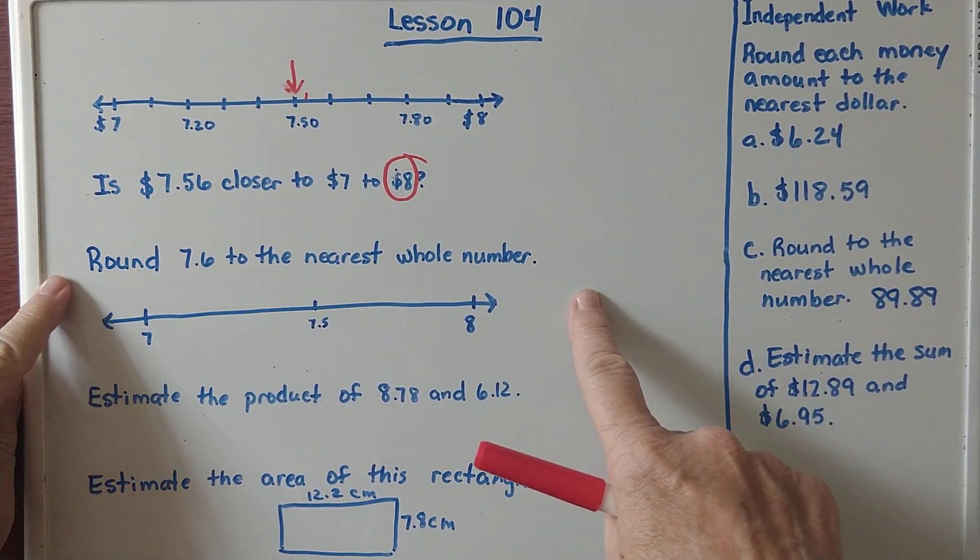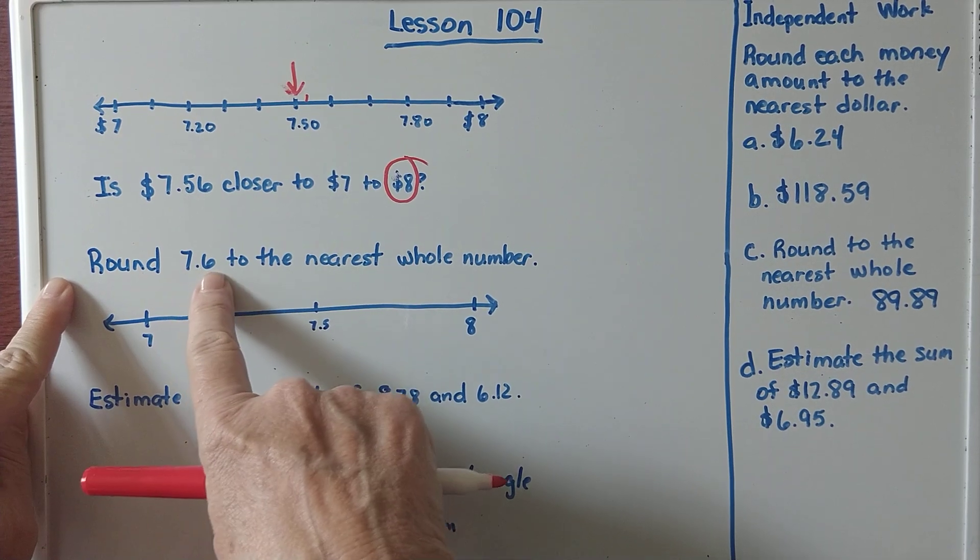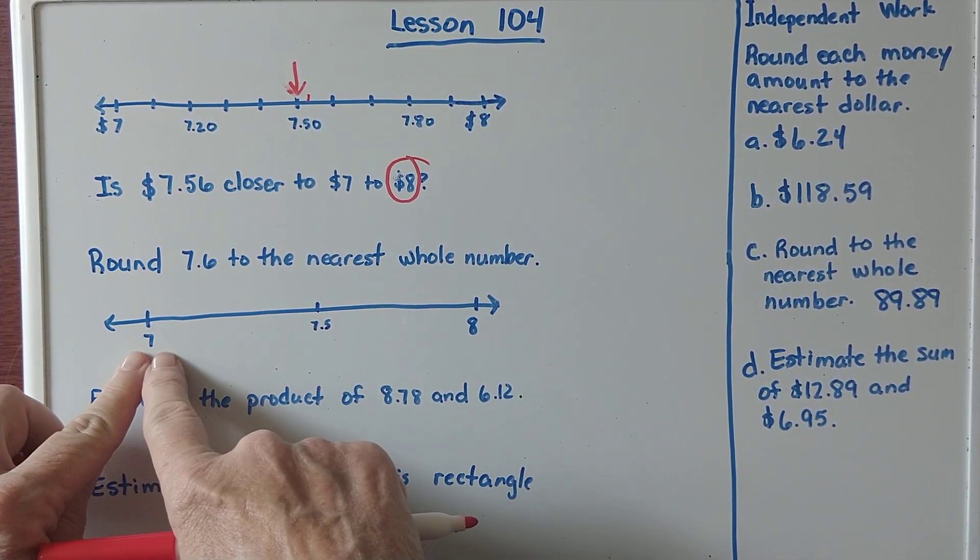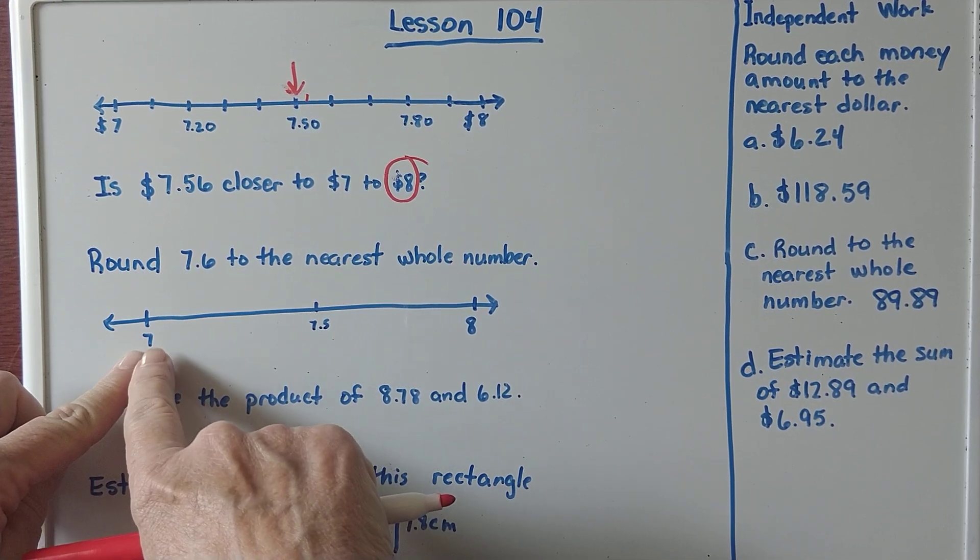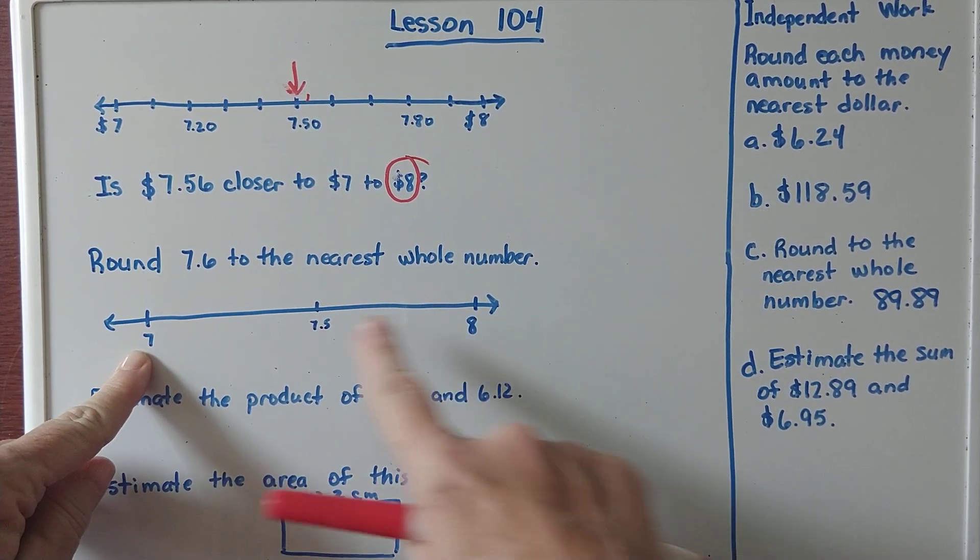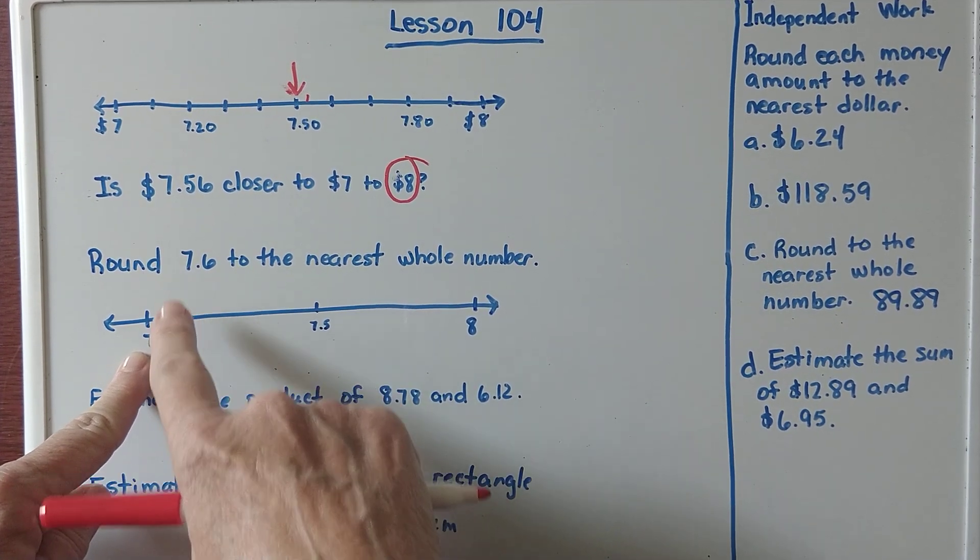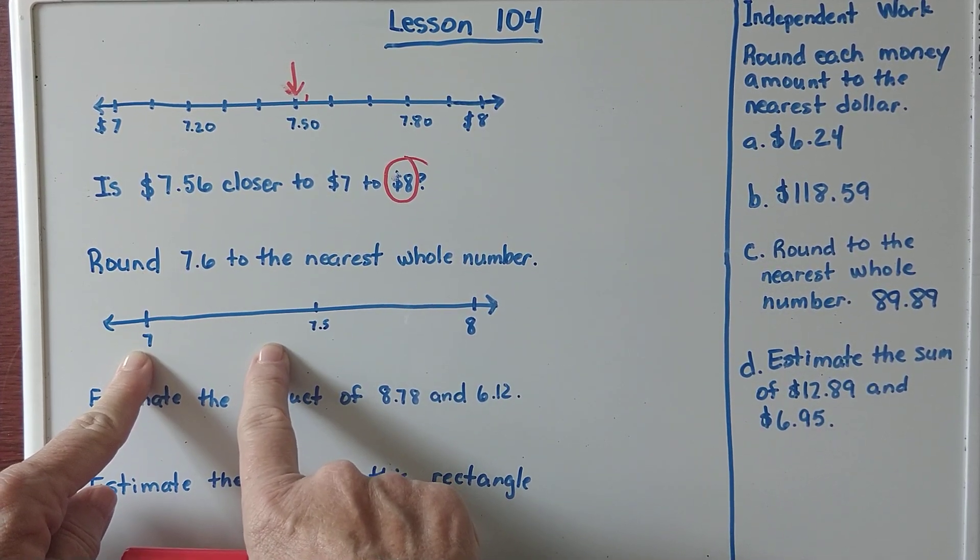Now we're going to round 7 and 6 tenths to the nearest whole number. We know that halfway between 7 and 8 is 7 and 5 tenths, or 7 and a half. Where would 7 and 6 tenths be on this line?